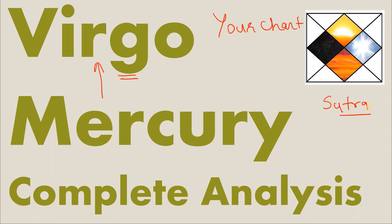A planet like Mercury in Virgo, which although is exalted, can create pleasant as well as unpleasant experiences during its Dasha period. Interpretation of the Dasha period will also be covered with examples so that the discussion we do here becomes more meaningful to you when you try to see it in your own chart.